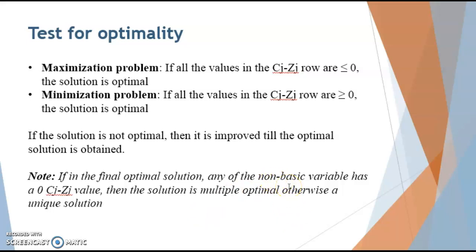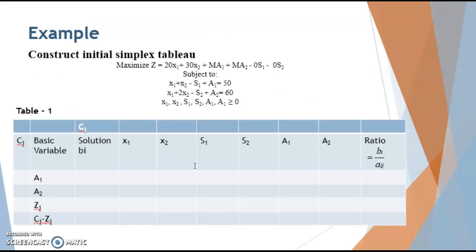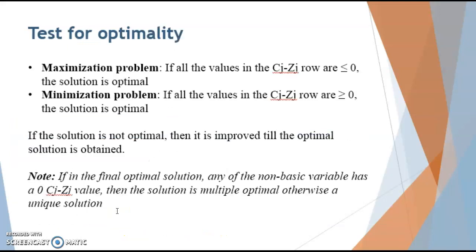Non-basic variables are the variables that are not in the basic variable column. In the initial table, variables such as x1, x2, s1, s2 are the non-basic variables. If any of these have a 0 value in Cj minus Zj, it means the solution is not unique and we have to improve it further.